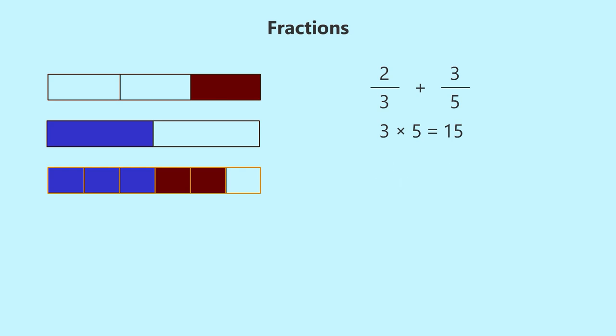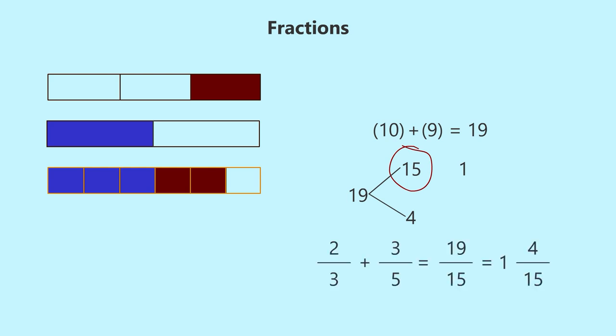Now, we have to add the parts in numerators. In two by three, there are 10 parts and in three by five, there are nine parts. That adds to 19. But 19 is more than 15. 15 parts make up one and four remains. So, the answer is one complete and four by 15.